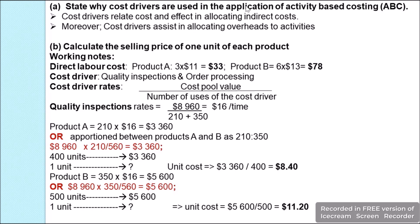When we talk about cost drivers, here we have cost drivers like quality inspection, order processing, and depreciation. All of these relate to cost, and we can effectively allocate indirect costs when we use them as cost drivers. Moreover, cost drivers assist us in allocating, apportioning, or dividing the overheads between various activities — here between product A and product B.